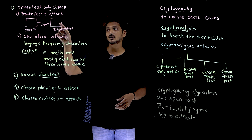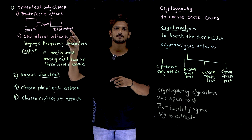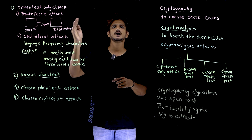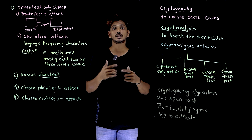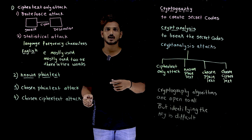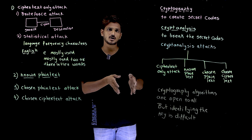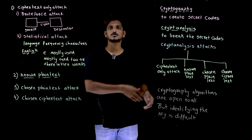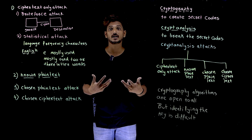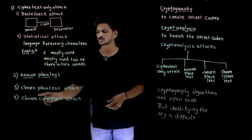Similarly, in chosen ciphertext attack, somehow you have access to the destination mobile, where decryption takes place. You choose different ciphertexts, give them as input, and collect the plaintext output. You try multiple ciphertext inputs and collect the resulting plaintexts to identify the logic and the key. That is what chosen ciphertext attack means.